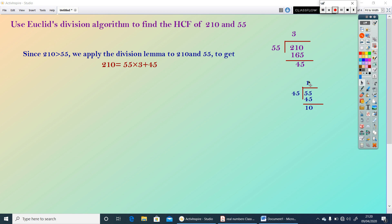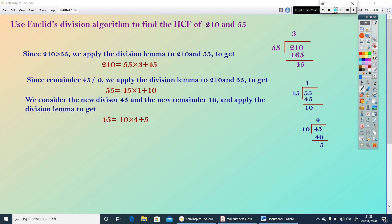Since, remainder 45 is not equal to 0, we apply Euclid's division lemma on 55 and 45. Let us divide 55 by 45. You get quotient as 1 and remainder as 10. If we apply Euclid's division lemma on 55 and 45, we are getting new divisor and new remainder, that is 45 and 10. Apply division lemma to 45 and 10.